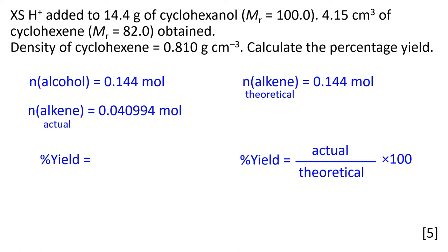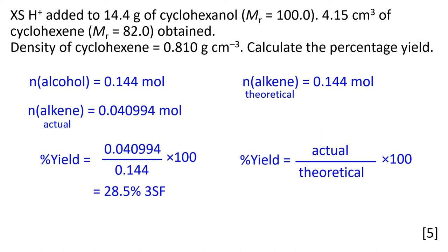The question required us to give our final answer to an appropriate number of significant figures — the fewest number of significant figures of any variable given in the question — so the final answer must be to three significant figures. That works out to be 28.5%. Don't forget, comments are welcome if you need any questions answered or would like further videos on other topics or past paper questions. Thank you.